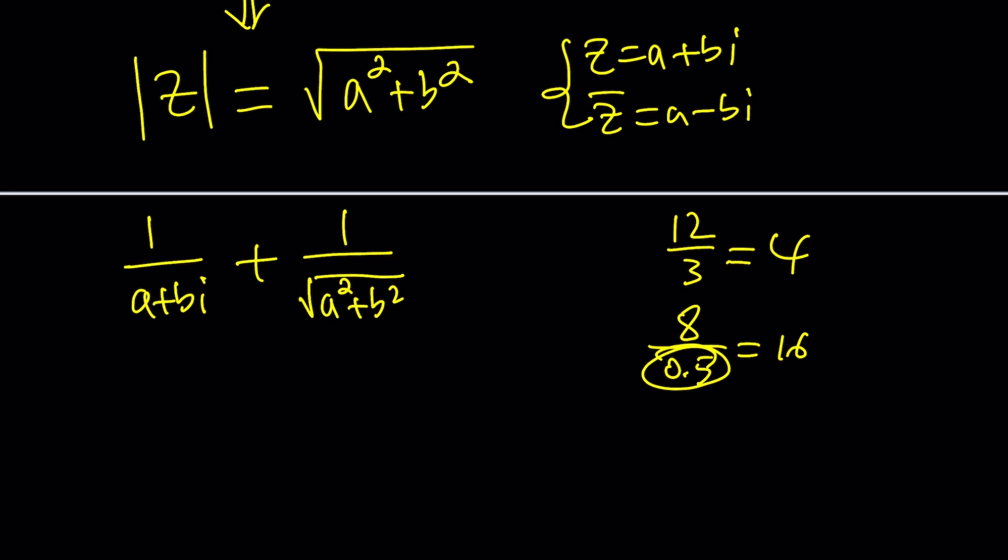Anyways so how do you do this? Like what times A plus B I is 1? I don't know. I mean I can find out like do the following. Multiply it by C plus D I and set it equal to 1 and try to solve for C and D in terms of A and B. Super complicated right? You don't want to do that.